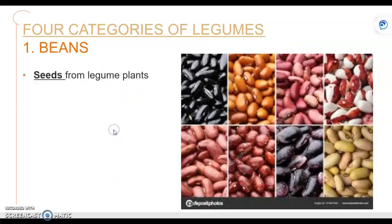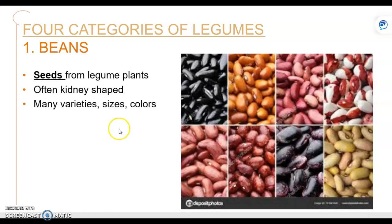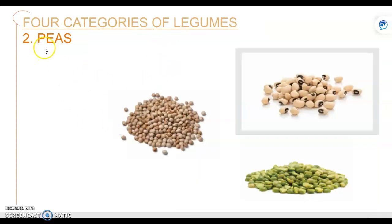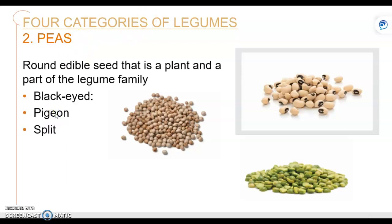So we'll look at beans first. Beans are actually the seeds from a legume plant. They're often kidney-shaped and they come in many varieties and colors. The second category of legumes is peas. Peas are the round edible seed that is part of the legume family. Black-eyed and pigeon split peas are examples.